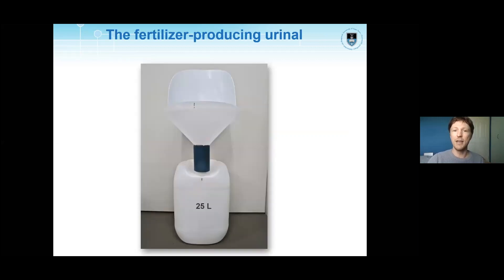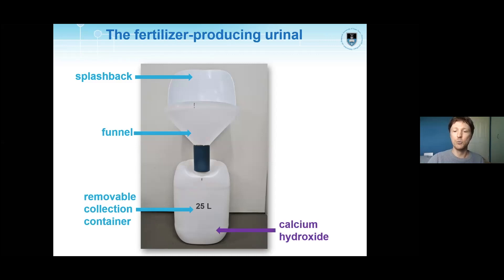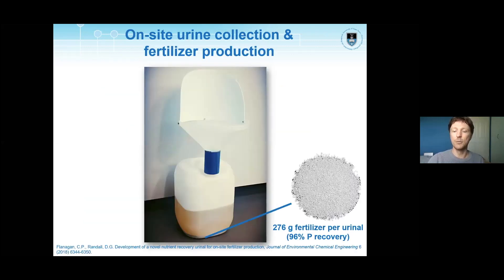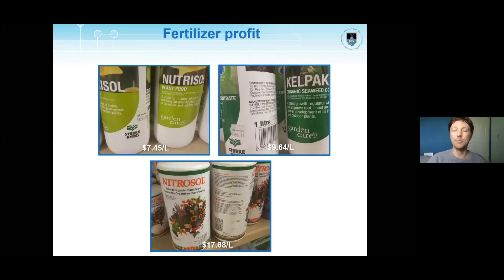This allowed us to develop a fertilizer-producing urinal. It consists of a removable container and a funnel with a splashback to which we add the calcium hydroxide, and you simply add your urine. From each 25-liter container we can produce about 280 grams of fertilizer with about 96% phosphorus recovery in the form of calcium phosphate. We are now looking at making liquid fertilizer from the treated urine and selling it as a high-grade fertilizer product.